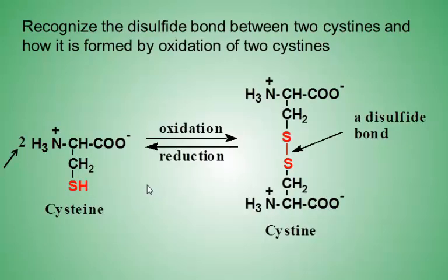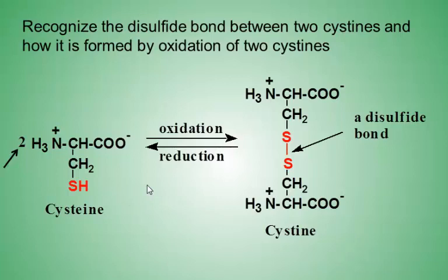A very important covalent bond forms between two amino acids. It is called a disulfide bond, and it forms between two cysteine amino acids. Two cysteine groups bond by an oxidation reaction to form a disulfide bond. Recall that oxidation is the loss of hydrogen — in this case, each cysteine amino acid loses one hydrogen. Disulfide bonds play an important role in the shape of a protein.